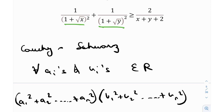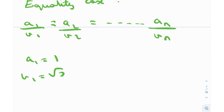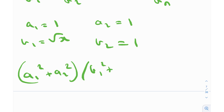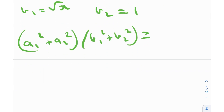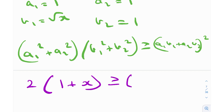I want to get a configuration similar to (1 + √x)² and (1 + √y)². I'm going to take a₁ = 1, b₁ = √x, a₂ = 1, b₂ = 1. From the Cauchy-Schwarz inequality, (a₁² + a₂²)(b₁² + b₂²) ≥ (a₁b₁ + a₂b₂)², which gives 2(1 + x) ≥ (1 + √x)².